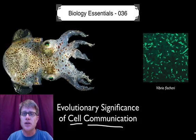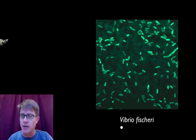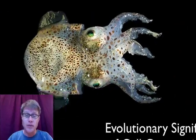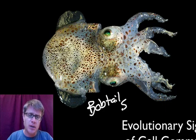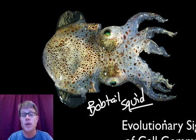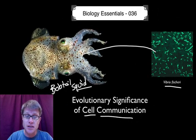I want to start with one of my favorite stories of symbiosis. Symbiosis is when two creatures are living together. The examples I have here are Vibrio fischeri, which is a bacteria that can bioluminesce — in other words it can glow — and the Hawaiian bobtail squid. The bobtail squid can also bioluminesce because it has these bacteria living inside it.